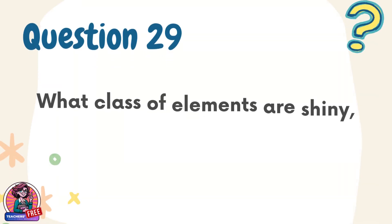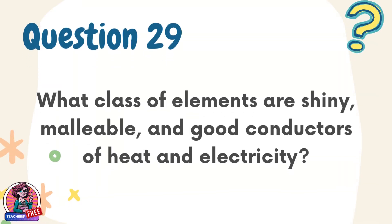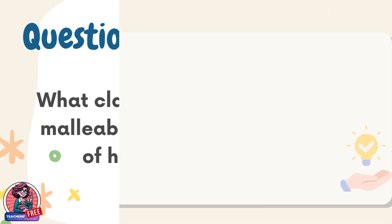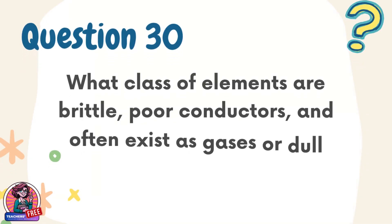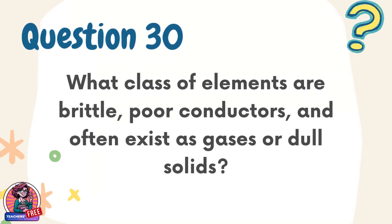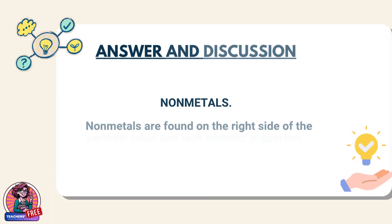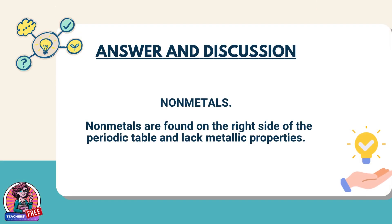Question 29. What class of elements are shiny, malleable, and good conductors of heat and electricity? Answer: Metals. Metals occupy the left and center of the periodic table and have distinct physical properties. Question 30. What class of elements are brittle, poor conductors, and often exist as gases or dull solids? Answer: Non-metals. Non-metals are found on the right side of the periodic table and lack metallic properties.